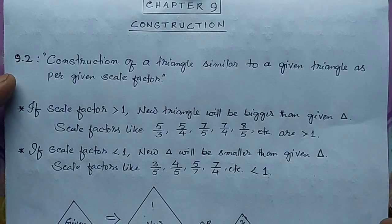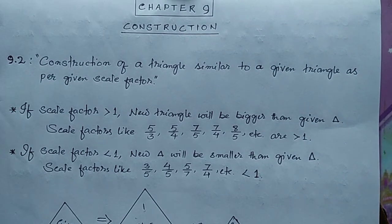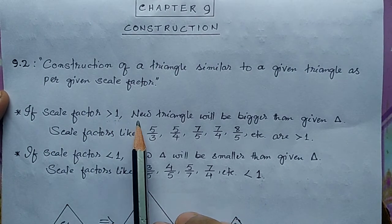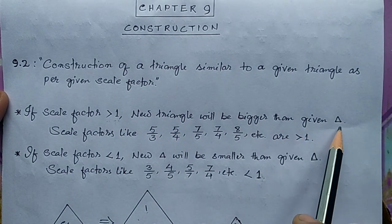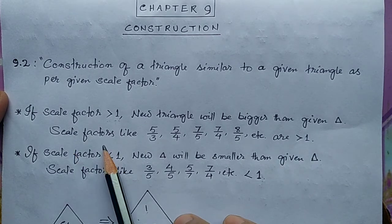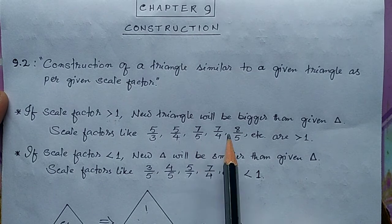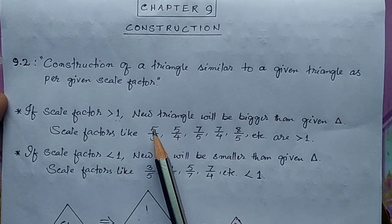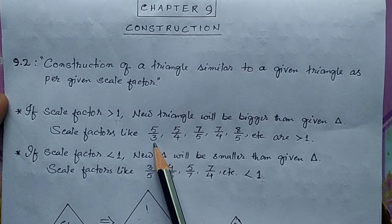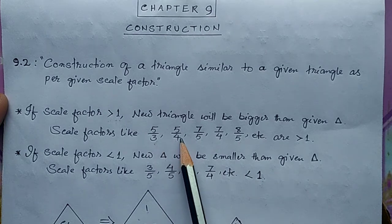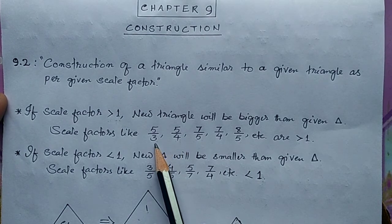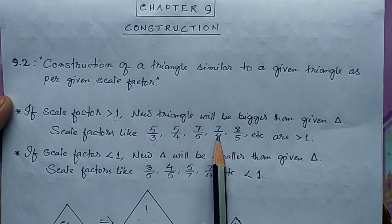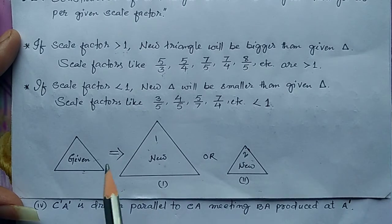The scale factor is simply a number in fraction form. If the scale factor is greater than one, the new triangle will be bigger than the given triangle. For example, fractions like 5/3, 5/4, 7/5, 7/4, 8/5 are all greater than one — in all these fractions, the denominator is smaller than the numerator.